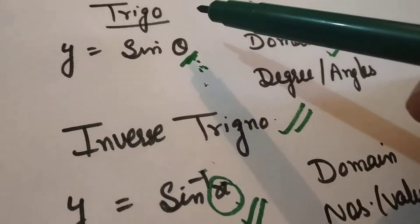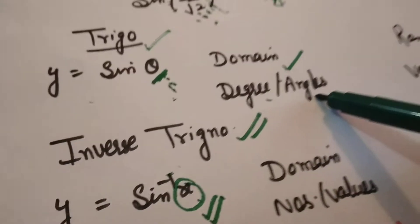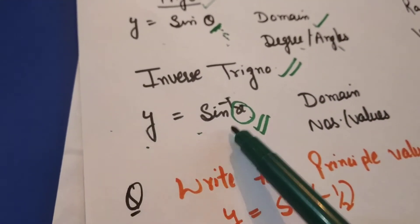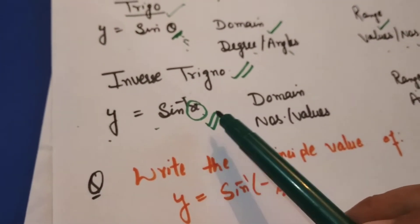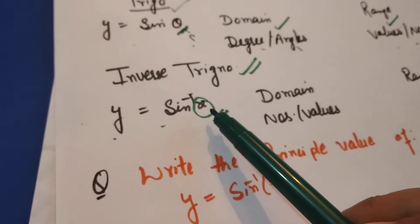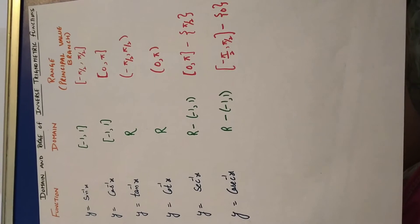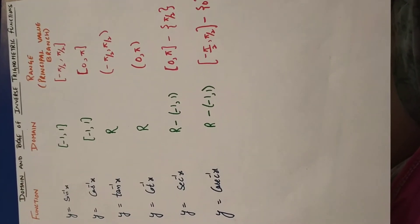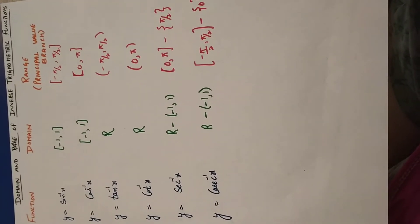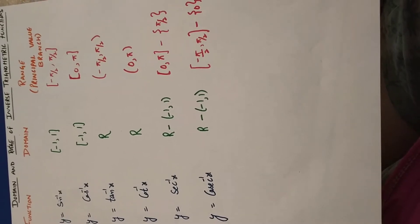To summarize: for y = sin(θ), the domain is angles and the range is values. For y = sin⁻¹(x), the domain consists of the values we input — like 1/2, √3/2, 1/√2 — and the range consists of the angles we get. Students, this range and domain of trigonometric functions is also given in your PDF file. You need to remember and learn it well, because questions will be solved on the basis of this.